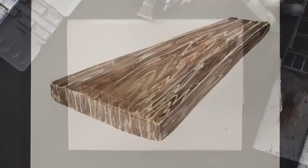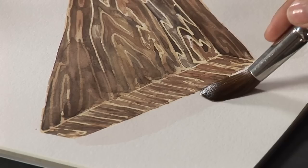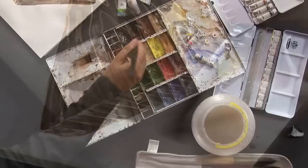To paint the shadow, you have to wet the paper first. Mix burnt umber and ultramarine blue to paint the shadow.